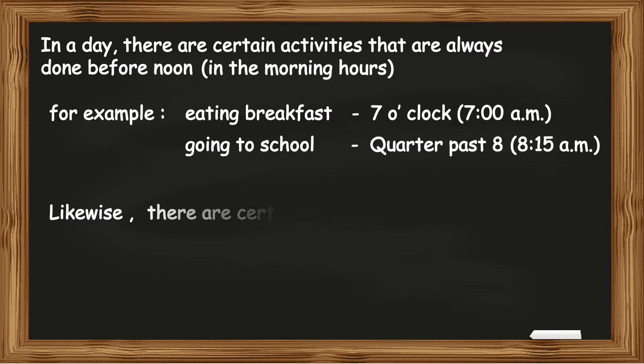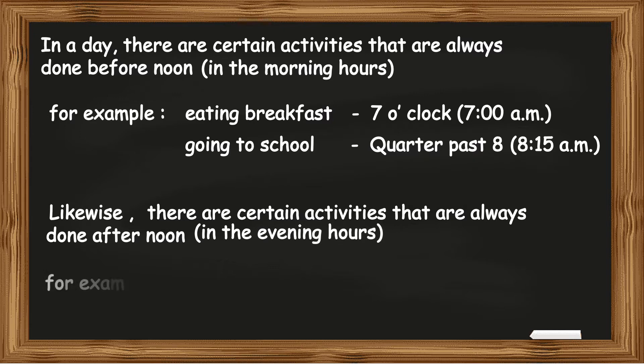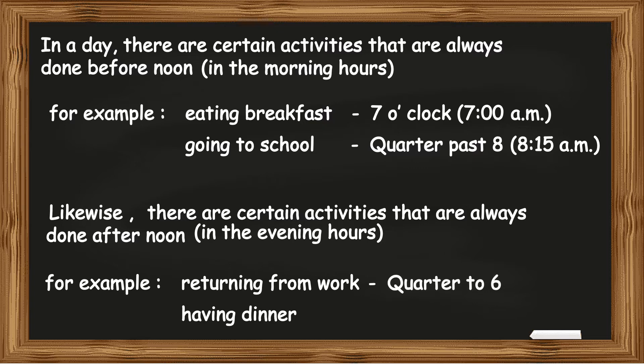Likewise, there are certain activities that are always done afternoon in the evening hours. For example, returning from work or having dinner. If I say Robin returns from work at quarter to 6, it means that he returns from work at 5:45pm or if he has dinner at half past 7, it means that he has dinner at 7:30pm.